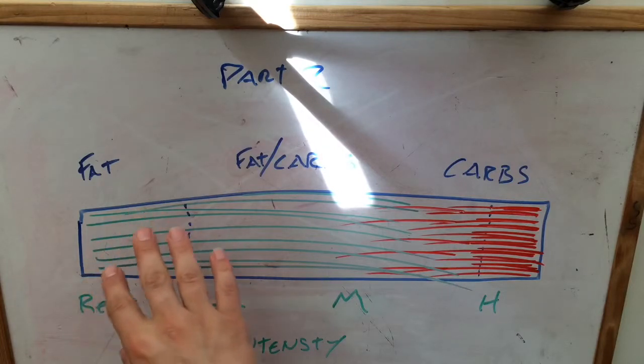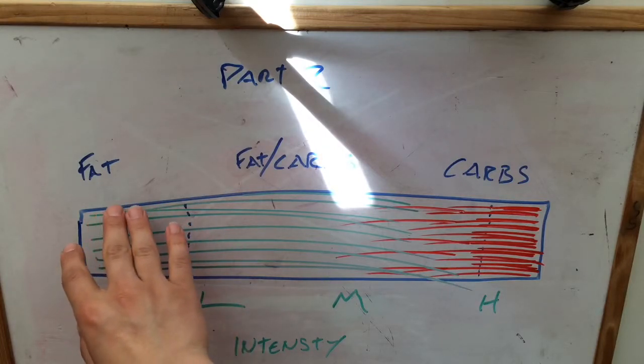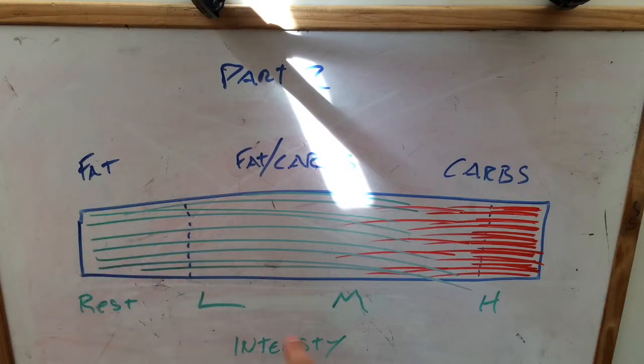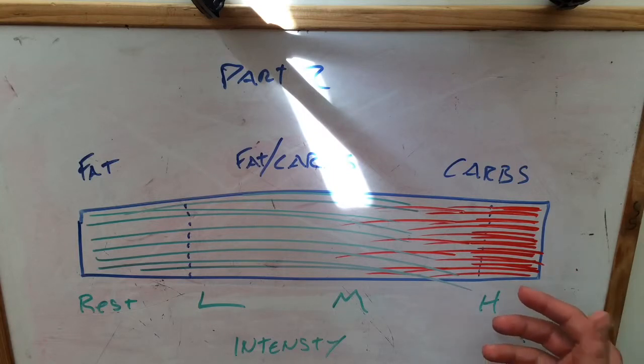When you're at rest, you burn mainly fat as a fuel source. But if you do something really high intensity for two minutes plus, that's really taxing and works at a maximum heart rate.